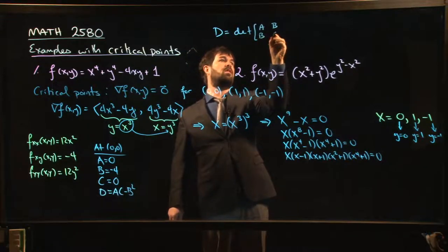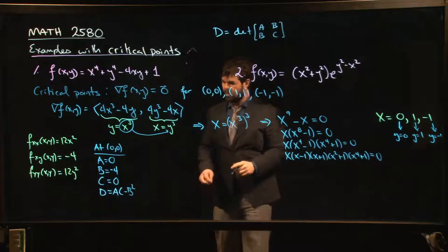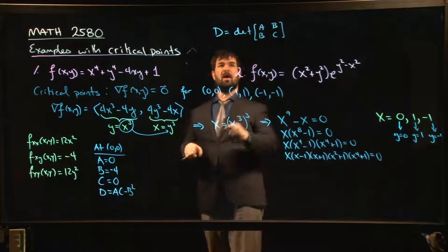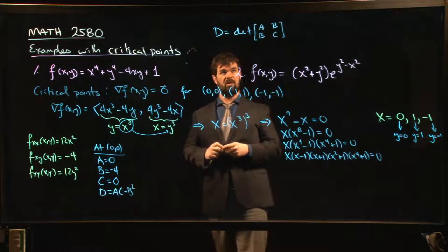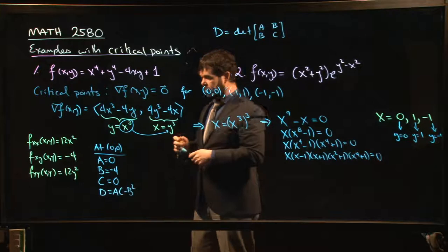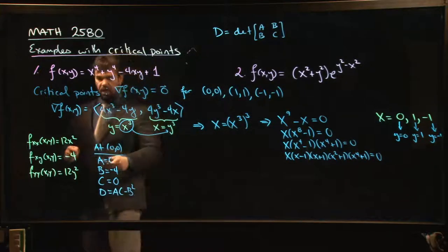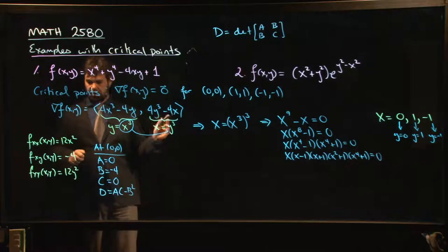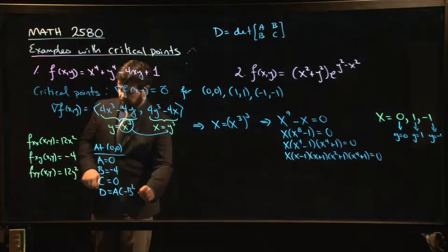d - remember that d is always given by this formula: a times c minus b². By the way, if this looks like a determinant to you, it is. This is one way that you might remember it. So d is the determinant of this symmetric matrix. If you bother to look up the details, you might find out why this matrix actually shows up and why it's significant and why it kind of leads to the second derivative test.